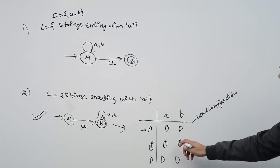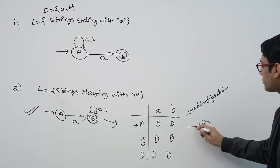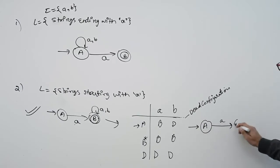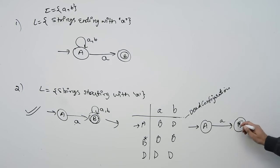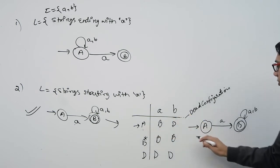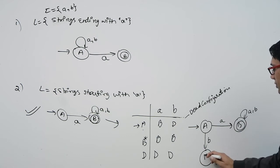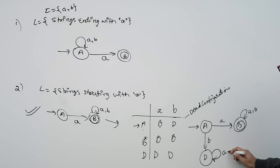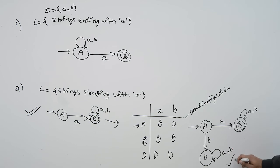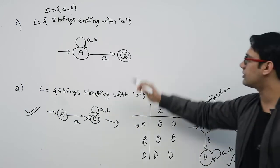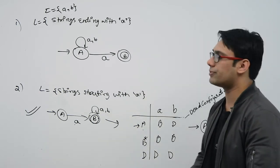Now let us draw the DFA. If we are in state A and see symbol 'a', we go to state B which is the final state. If in state A we see small 'b', we go to dead state D. If we are at state D and see either 'a' or 'b', we remain stuck at the dead state. This diagram is now representing a DFA.